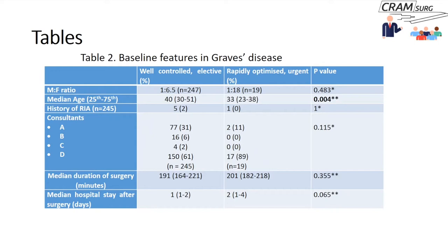Let's talk about tables. Here's a table showing some baseline features in Graves' disease. The heading describes the table, and it compares characteristics across two different groups of patients. There is data such as male/female ratio and RIA use — which is qualitative — and data such as age, duration of surgery, and hospital stay after surgery, which is quantitative. So there's a mixture of data types.